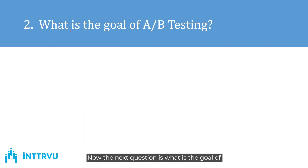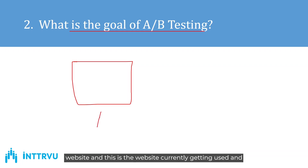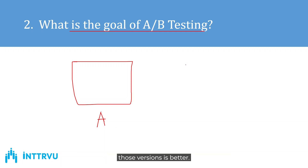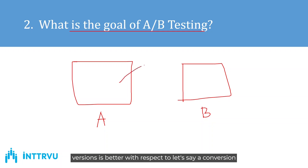The next question was: what is the goal of A/B testing? A/B testing is used whenever you have to evaluate two different versions of the same product. For example, you have version A of a website currently in use, and your team has come up with a new version B. You want to evaluate which version is better with respect to a metric like conversion rate.